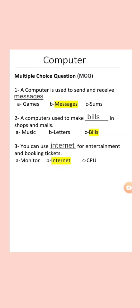So the right answer is: a computer is used to make bills in shops and malls. Number 3: you can use dash for entertainment and booking tickets. Options: A) Monitor, B) Internet, C) CPU. The right answer is Internet.